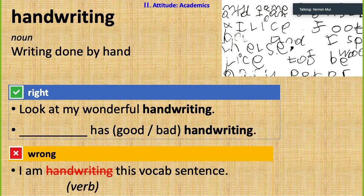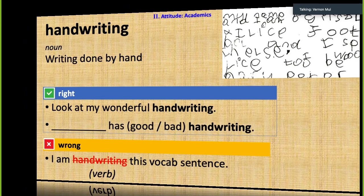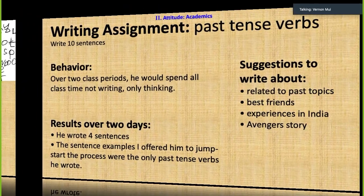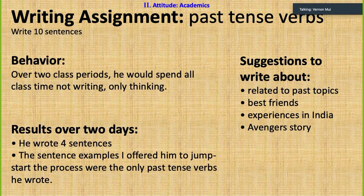For Jay, writing is a slow and difficult task. The rest of the class gets frustrated with him, saying to hurry and finish so we can move on to the next word. About writing — we were doing a writing assignment where they would write 10 sentences in the past tense about anything they wanted.